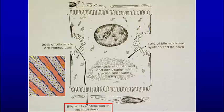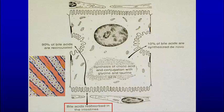Bile salts are absorbed from the small intestine. Bile is dumped into the small intestine, bile salts come back through the blood vessels and are reabsorbed. Some are also newly synthesized. Ninety percent of the bile salts are recycled: bile is dumped out, stored in the gallbladder, goes into the small intestine, then reabsorbed back into the blood, and then hepatocytes put it back into the bile. The conjugation capability in the smooth endoplasmic reticulum produces those bile salts. So 90% is recycled.